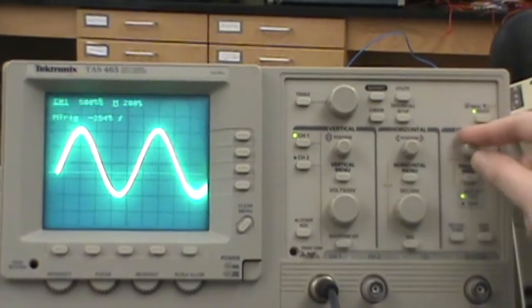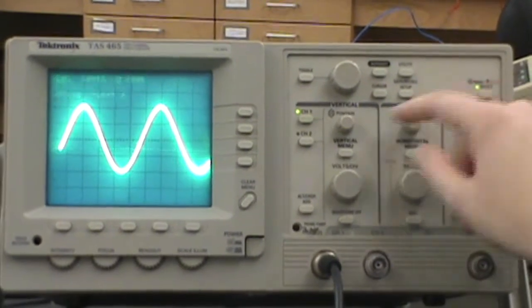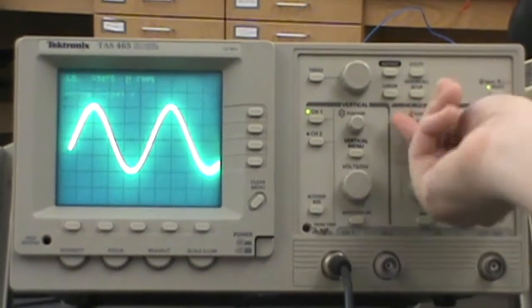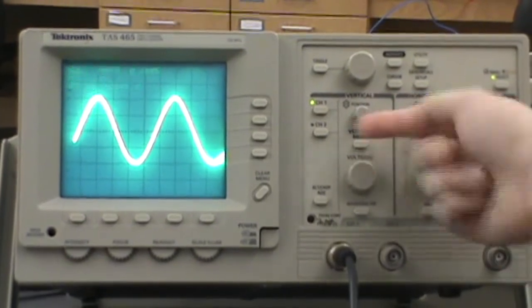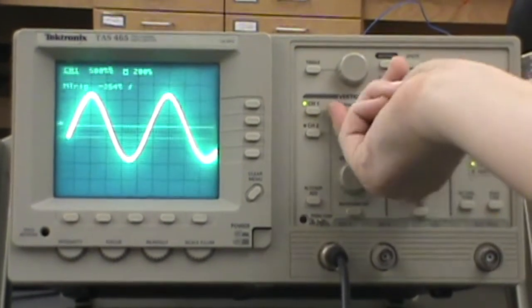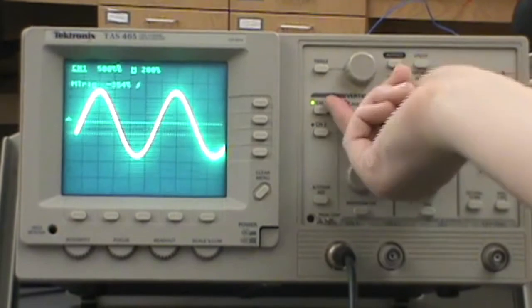Then, of course, the other way to move your waveform other than back and forth is up and down, which you can do using the vertical knob, which moves your waveform up and down.